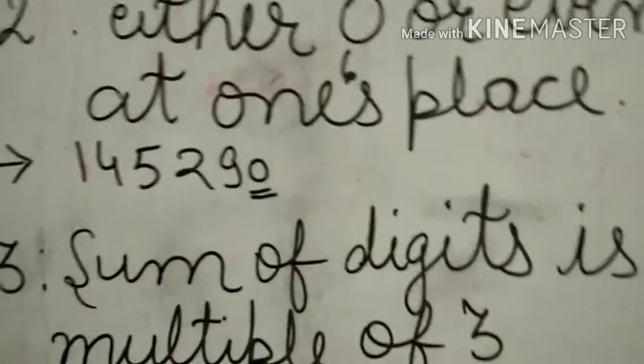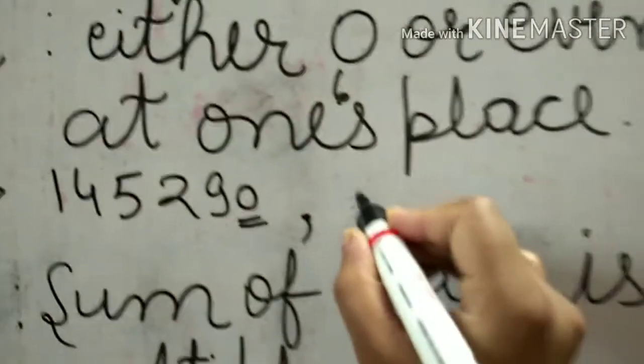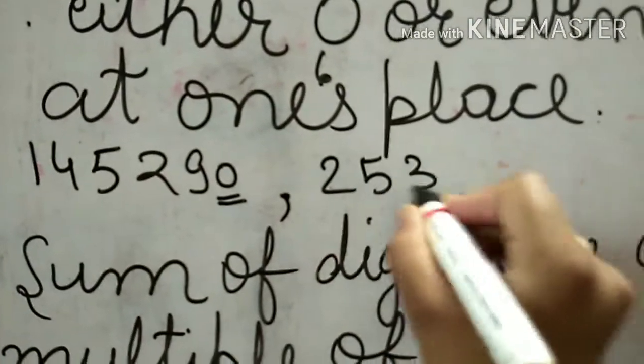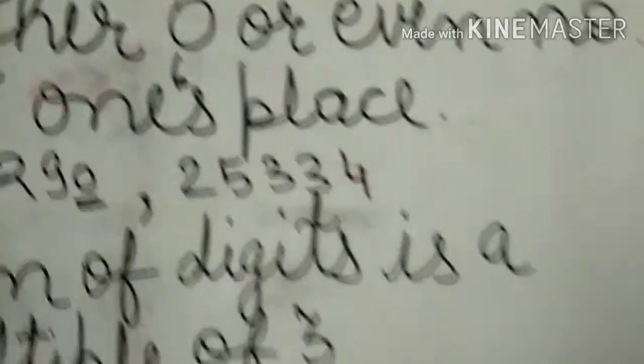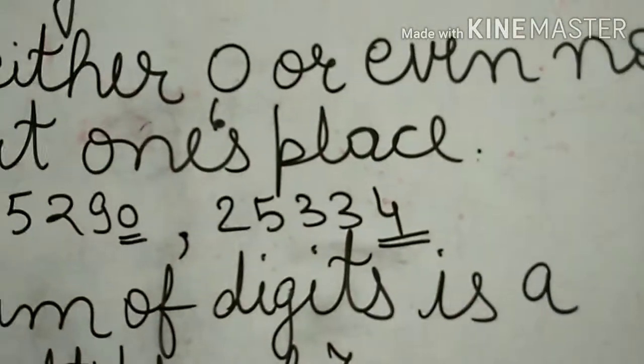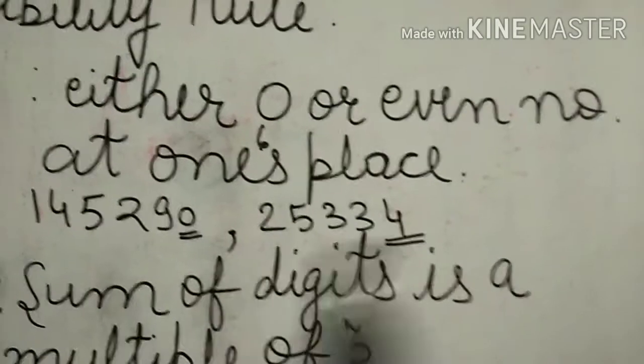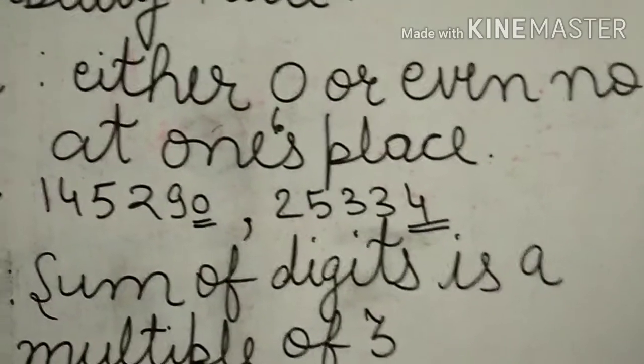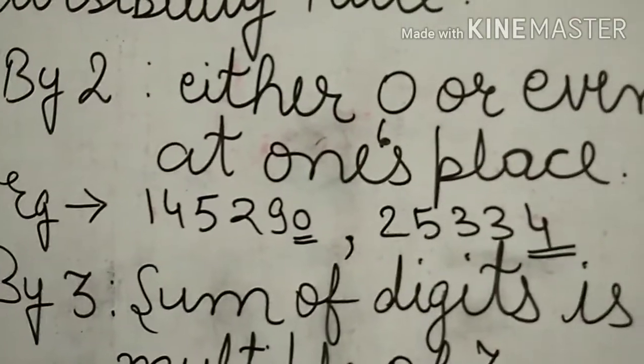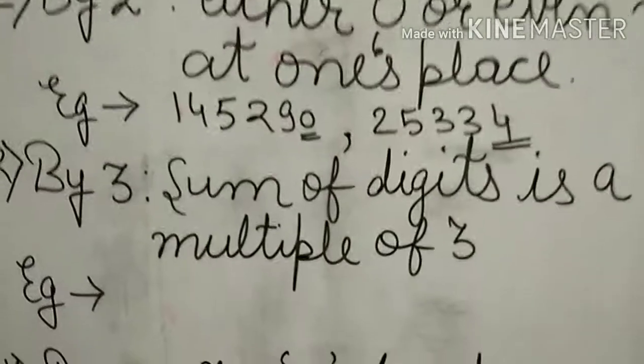If the number is 25334, four is an even number. So either zero or any even number at one's place means the number is divisible by two.